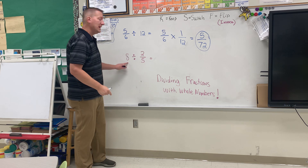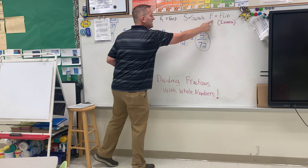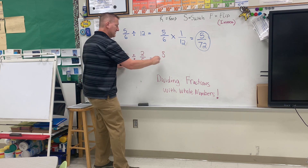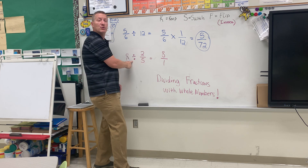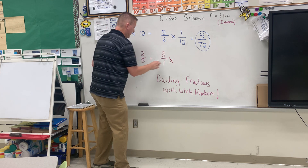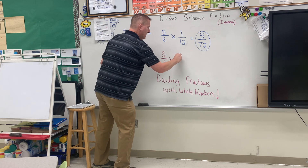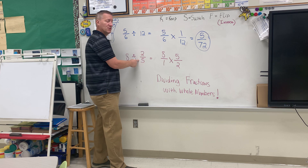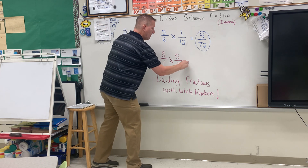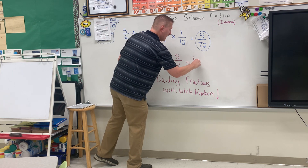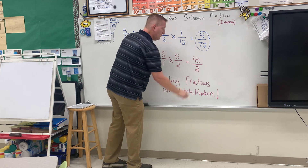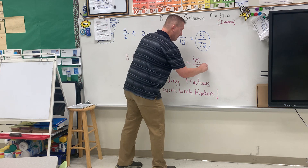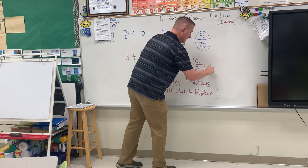Now here we're starting with a whole number, so let's apply the same keep switch flip. This time you have an eight, so it's eight over one. You keep that, you switch the division sign to multiplication, and then you flip the two-fifths — so now you get five over two rather than two-fifths. Then you simply multiply: eight times five is 40, and one times two is two. Two goes into 40 twenty times, so that would be 20.